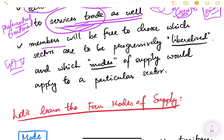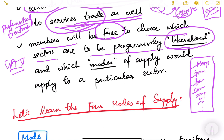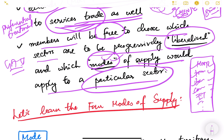As part of GATS it was also mentioned that members will be free to choose which sectors are to be progressively liberalized. It is not that in one go in 1995 all service sectors would be liberalized — there are so many sectors: hospitality, transport, banking, commerce, IT, etc. Countries will be free to choose which sectors to liberalize and also which modes of supply would apply to a particular sector.